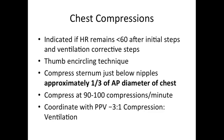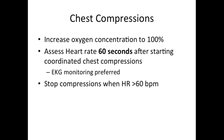Chest compressions are indicated if the heart rate remains less than 60 after initial steps and your ventilatory corrective steps. Using the thumb encircling technique, compress the sternum just below the nipples to approximately one-third of the diameter of the chest. Compress at a rate of 90 to 100 compressions per minute, coordinating with PPV at a compression to ventilation ratio of 3 to 1. If administering chest compressions, oxygen concentration should be increased to 100%. Assess heart rate 60 seconds after starting compressions; compressions can be stopped when the heart rate is greater than 60 beats per minute.